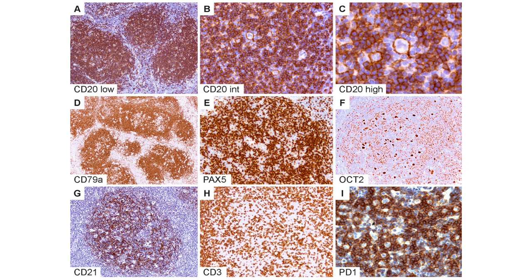CD21 in figure G defines the intact follicular dendritic cell meshwork within the NLPHL nodule. CD3 in figure H shows the background T cells with occasional ring formation. Figure I shows a very nice PD-1 staining demonstrating rosetting around the LP cells.